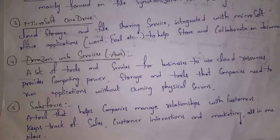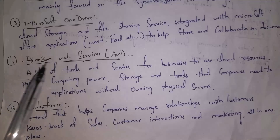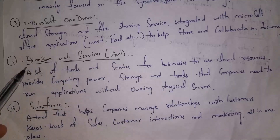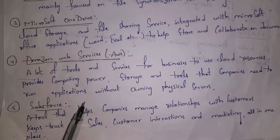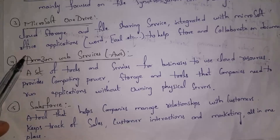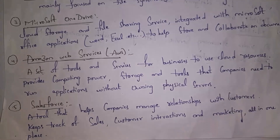The fourth one is Amazon Web Services, shortly called AWS. AWS provides a set of tools and services for businesses to use cloud resources. Many software companies use AWS to access cloud resources like network, servers, and storage. It provides computing power, storage, and tools that a company needs to run applications without owning physical servers. Instead of purchasing costly servers, companies can rent them through AWS, which saves money.